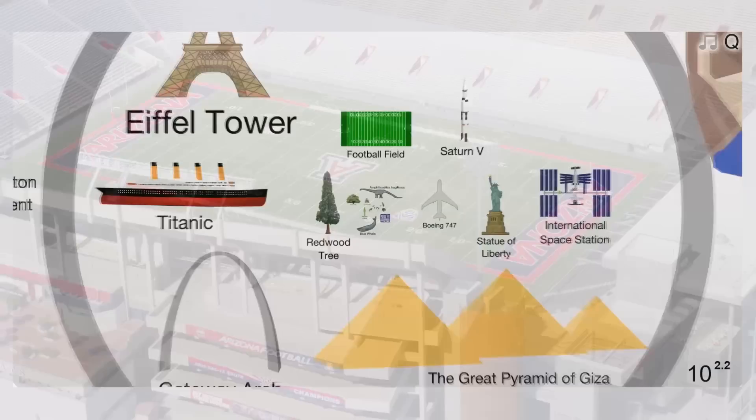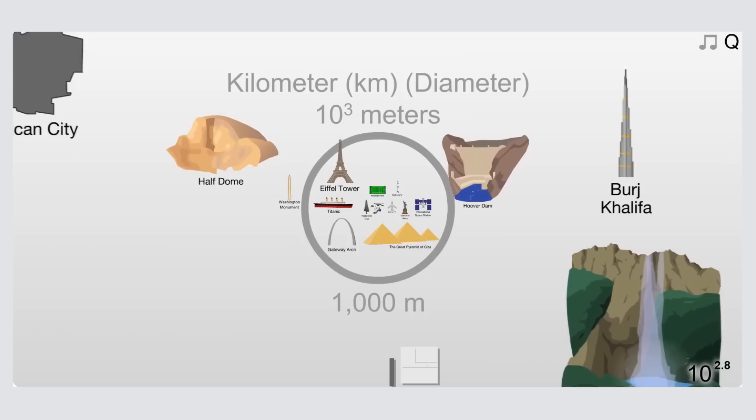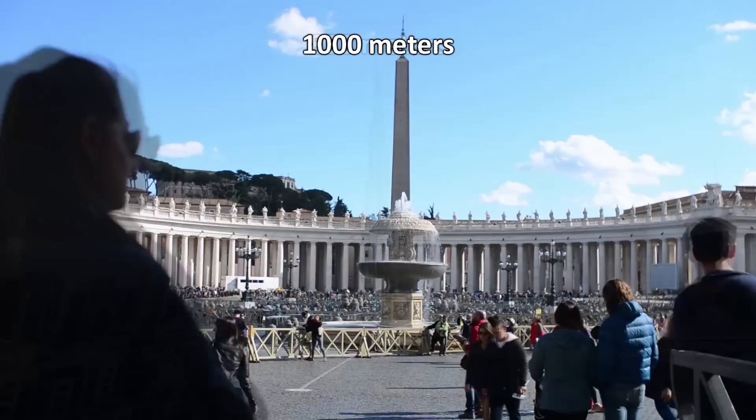Let's go 1000 times bigger than the scale of a human, about 1000 meters. Now we're looking at the tallest building in the world, the Burj Khalifa, 830 meters. Also Vatican City, is only about 1 kilometer in length.